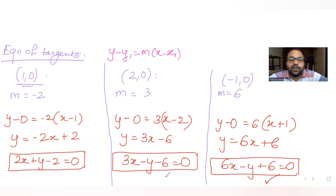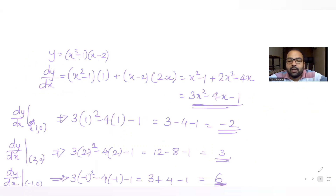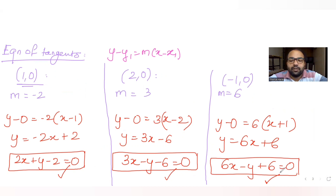So we get all three equations of tangents formed when the curve y equals x squared minus 1 into x minus 2 intersects the x-axis. The three equations are: 2x plus y minus 2 equals 0, 3x minus y minus 6 equals 0, and 6x minus y plus 6 equals 0.